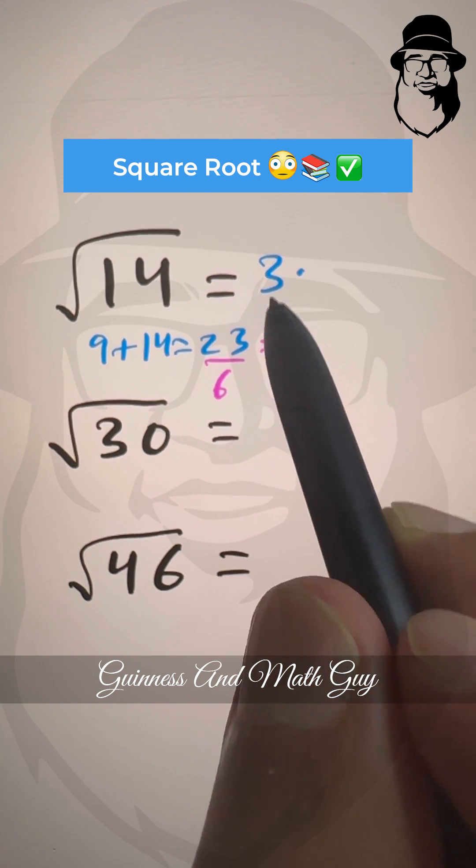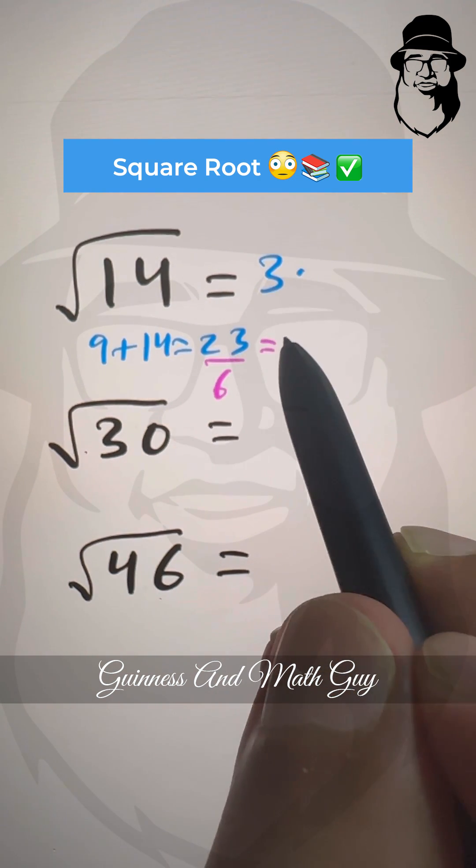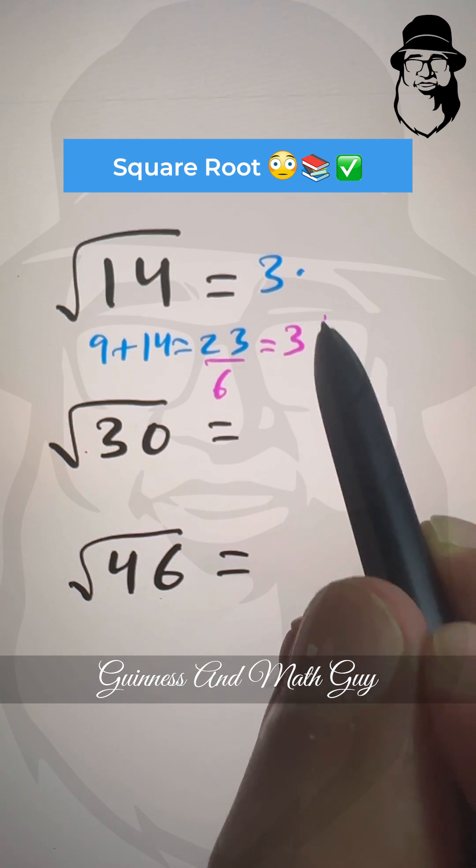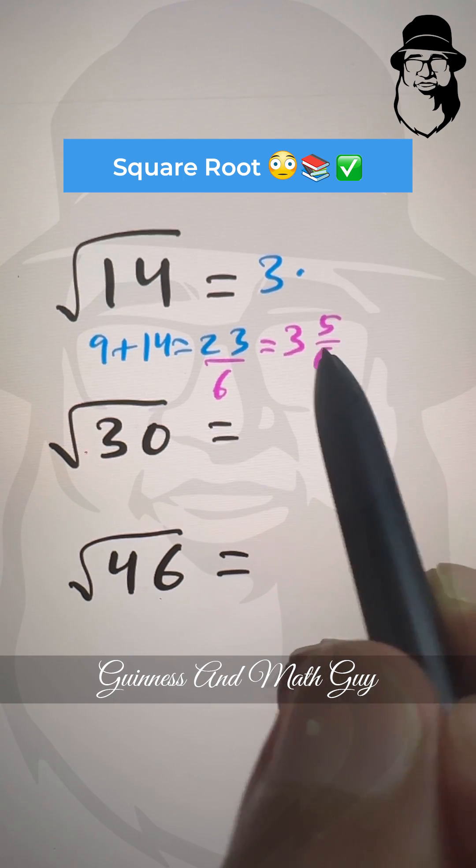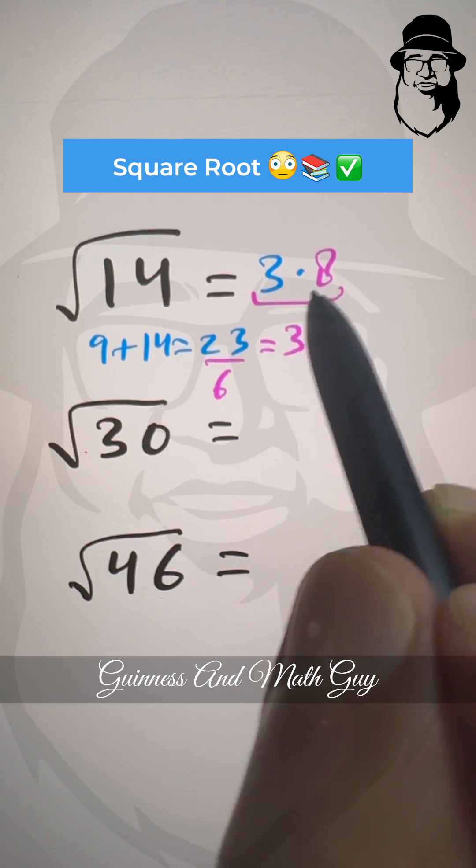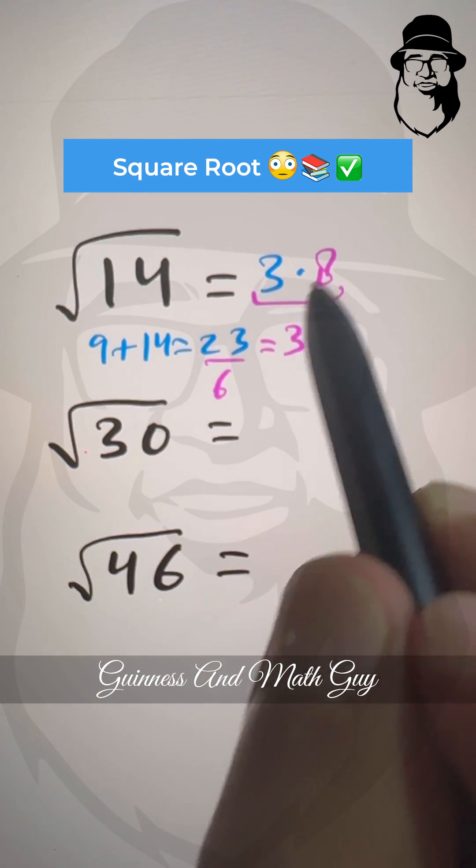So 6 times 3 is 18, and we have 5 remainder, so 5 over 6. And 5 over 6 is 0.83, we'll take the first digit 8 only. And this is our approximation to one decimal point for square root of 14.